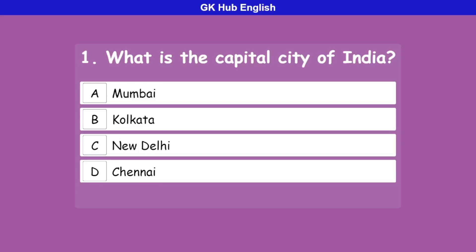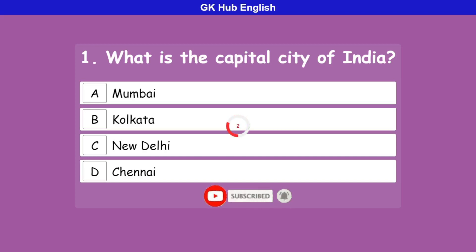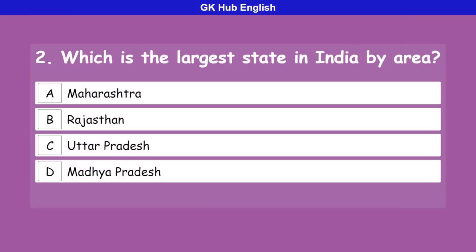Question 1: What is the capital city of India? Option A is Mumbai, option B is Kolkata, option C is New Delhi, option D is Chennai. Correct answer is New Delhi.